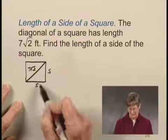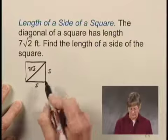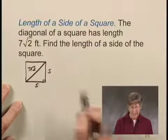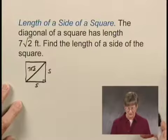And we can see that we have in this lower portion of the square a right triangle. And that tells us that we can use the Pythagorean theorem to find S.